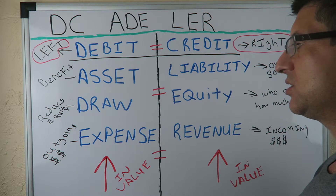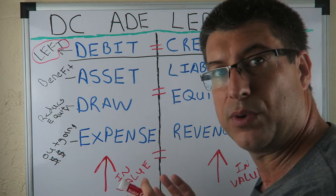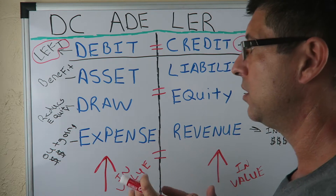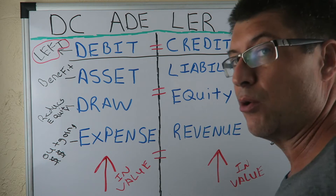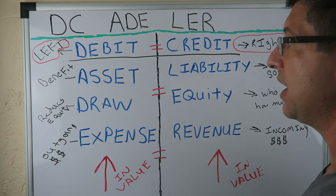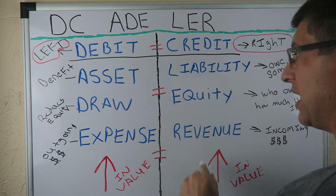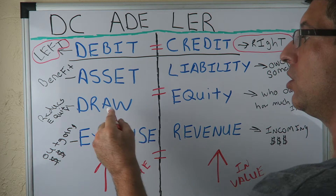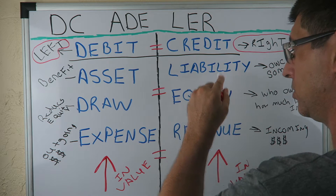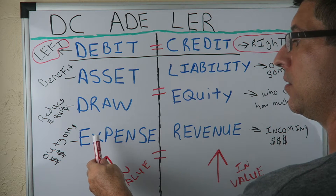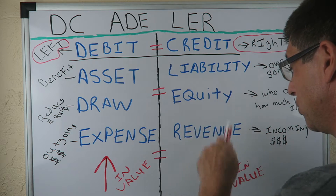So we know if these are going up where we put them — debit or credit. Let's say each of these are going down. What would you do? Asset decrease in value: credit. Withdrawal decrease in value: credit. Expense decrease in value: credit.